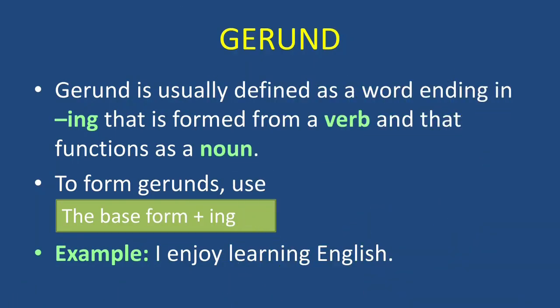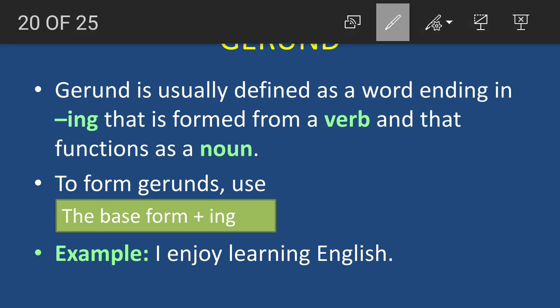Good morning, dear students. In our earlier videos you learned about infinitives and participles. Today we'll learn about gerunds. A gerund is usually defined as a word ending in -ing. You have already seen present participle, which is also verb plus -ing. So what is the difference between gerund and present participle? A present participle acts as an adjective, while a gerund acts as a noun.